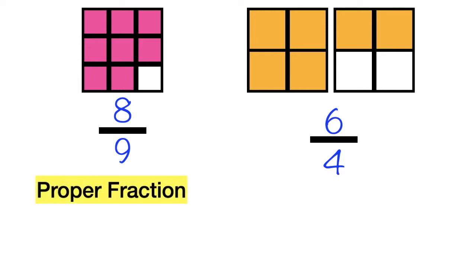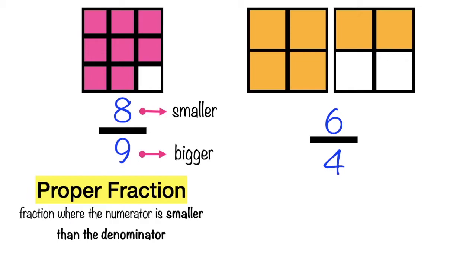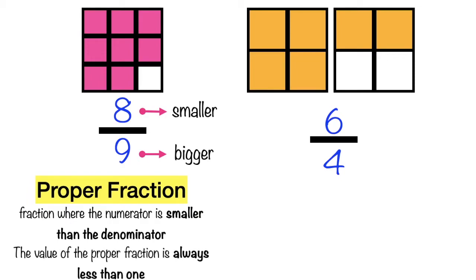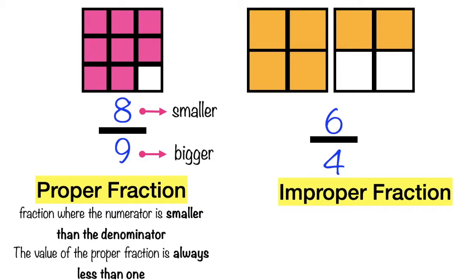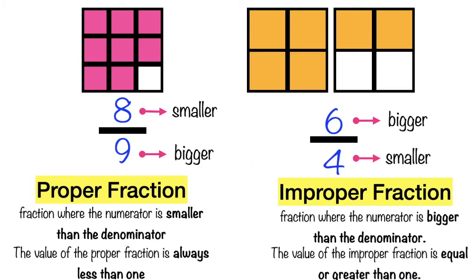8 ninths is what we call a proper fraction. When you say proper fraction, it is the fraction where the numerator is smaller than the denominator. Also, the value of the proper fraction is always less than 1. While the fraction on the right side, 6 fourths, is what we call an improper fraction. When you say improper fraction, it is the fraction where the numerator is bigger than the denominator. Also, the value of the improper fraction is equal to or greater than 1.